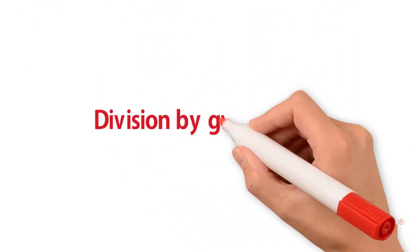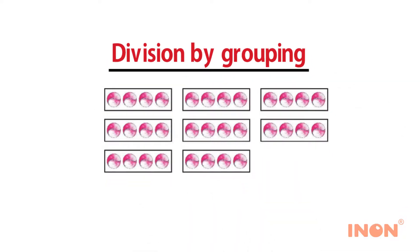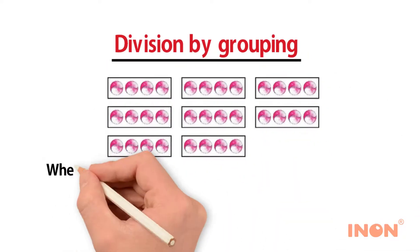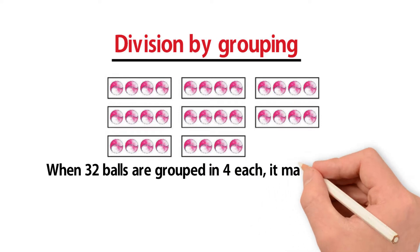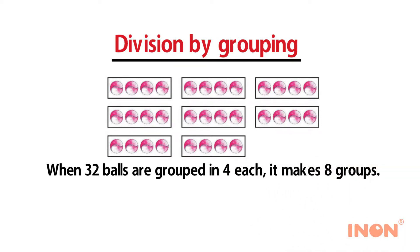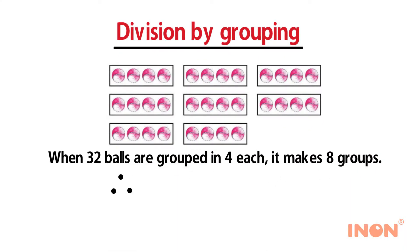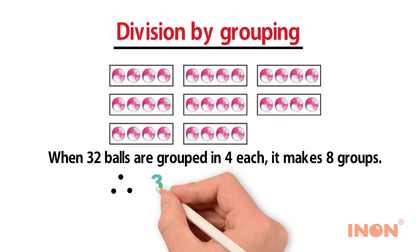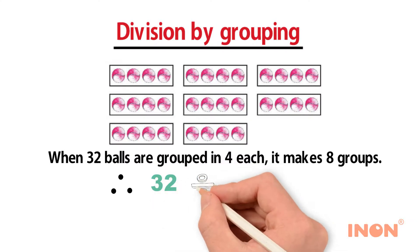Division by grouping: when 32 balls are grouped in 4 each, it makes 8 groups. Therefore, 32 divided by 4 is equal to 8.